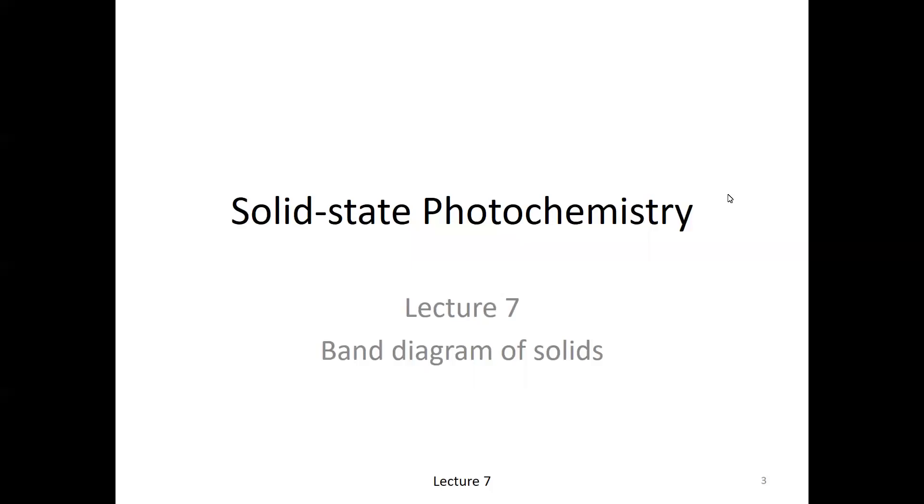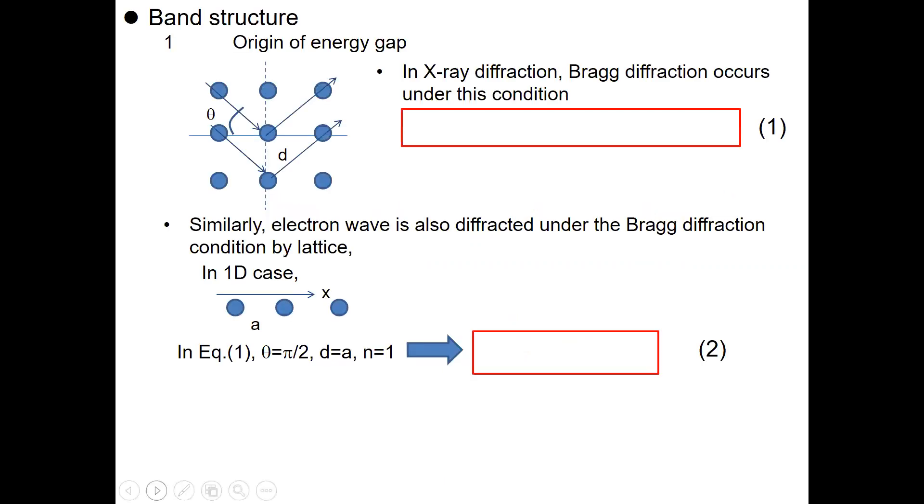In lecture 7, we are going to study the band diagram of solids and the band structure, which is one of the most important concepts in solid physics, and also necessary knowledge to understand the photo-electrochemical interface. So, first of all, let's think about the origin of the energy gap you can see in the band structure of solids.